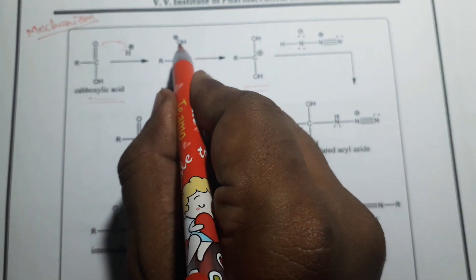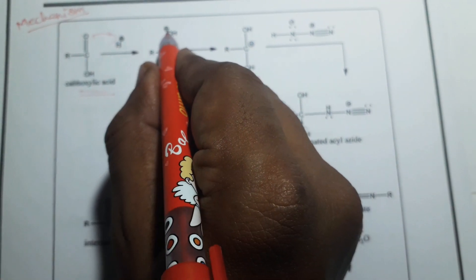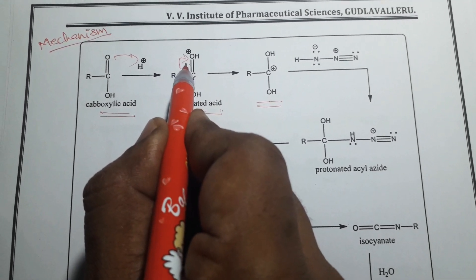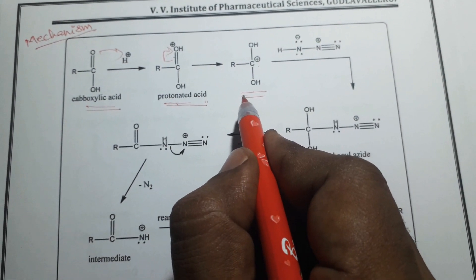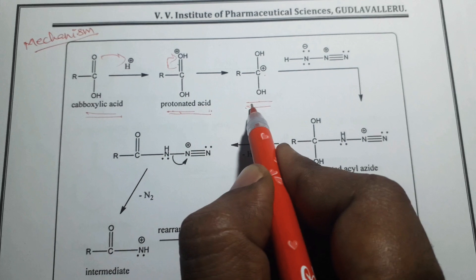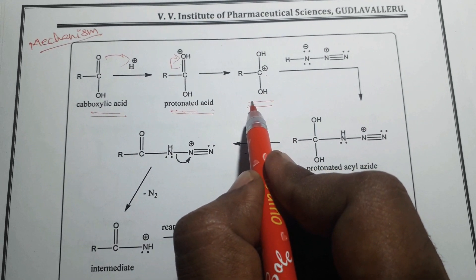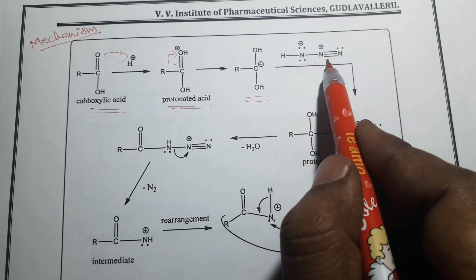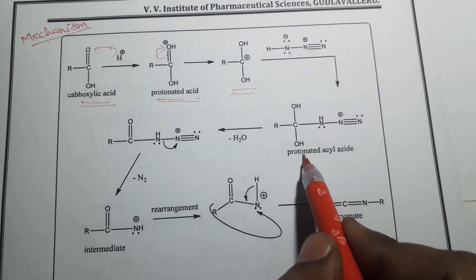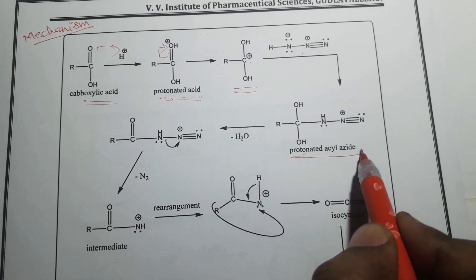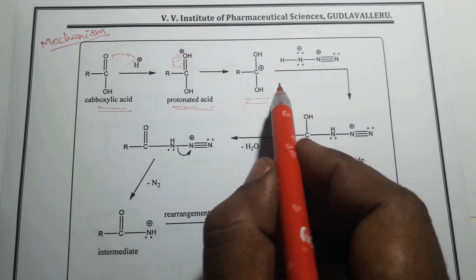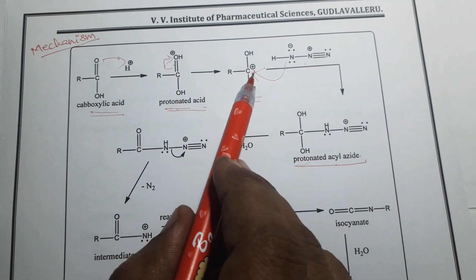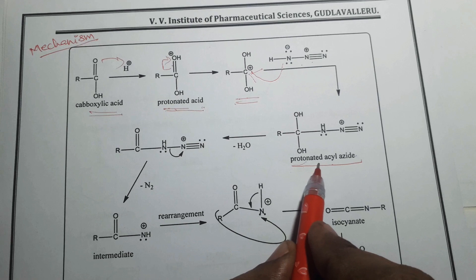This protonated acid has a positive charge on the oxygen. To nullify this positive charge, the bonding electrons are shifted so that the carbon gets the positive charge, giving a carbocation. This carbocation form of the protonated acid then reacts with hydrozoic acid, and the negative charge of hydrozoic acid binds with this positively charged carbon, giving the protonated acyl azide.